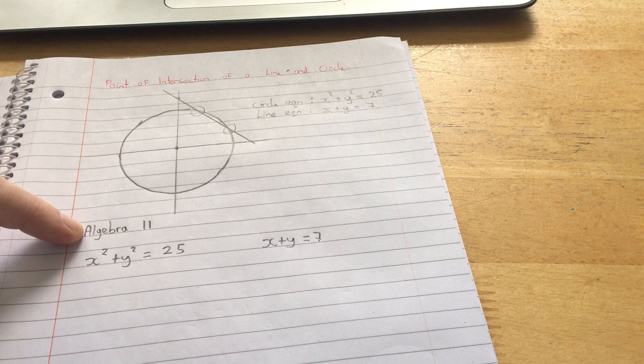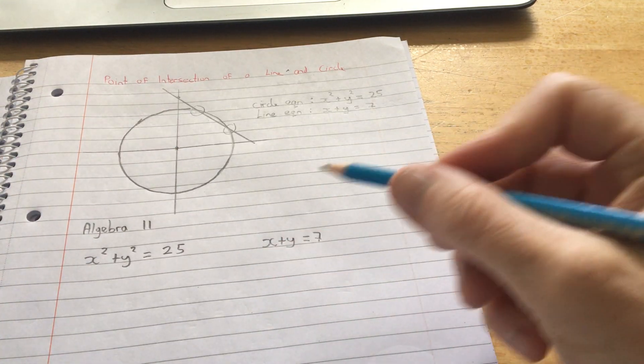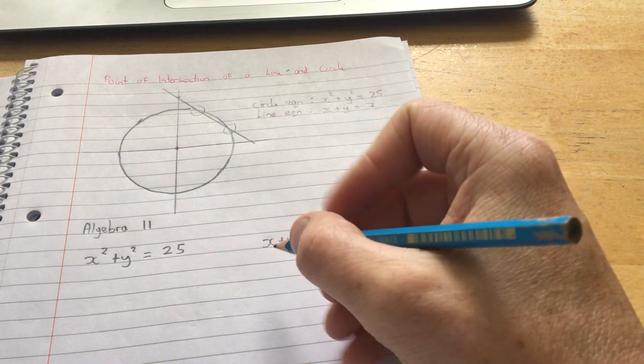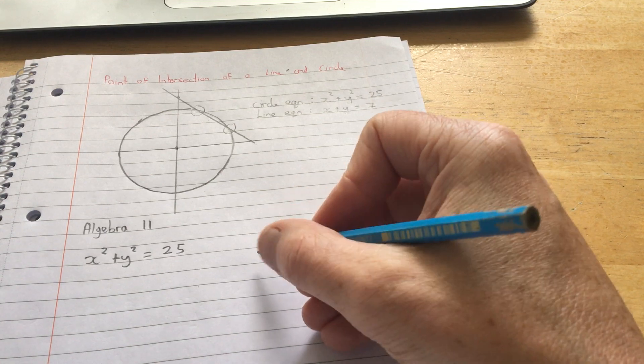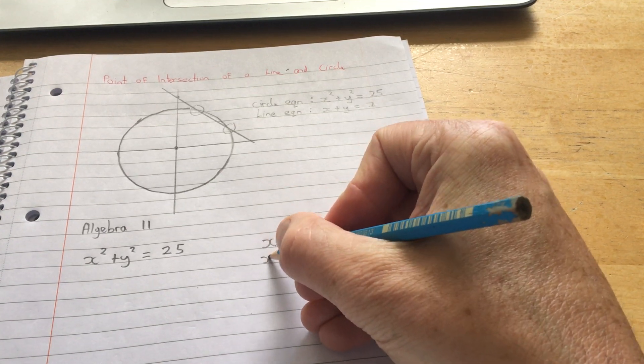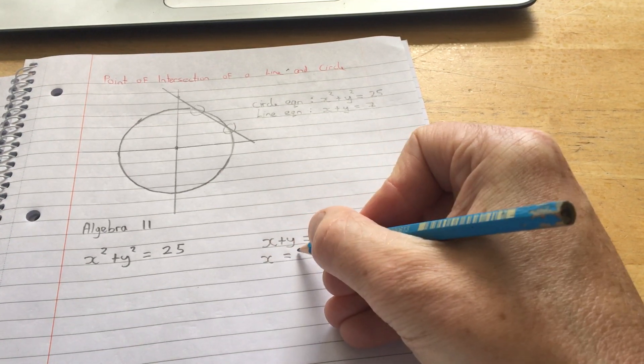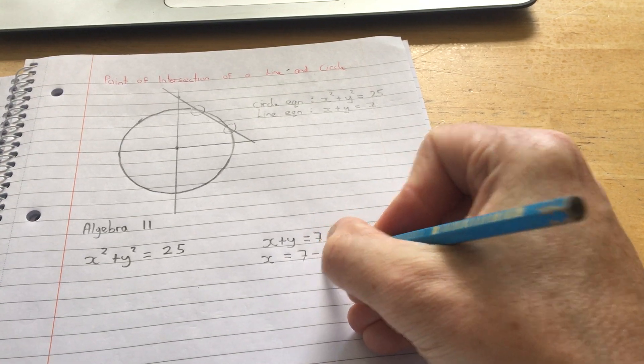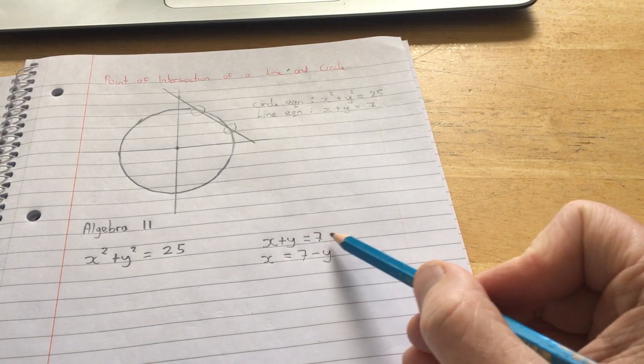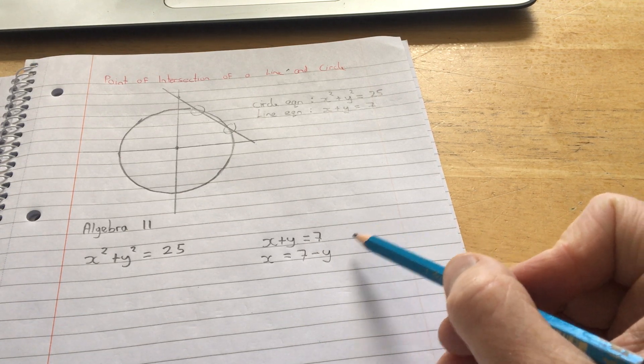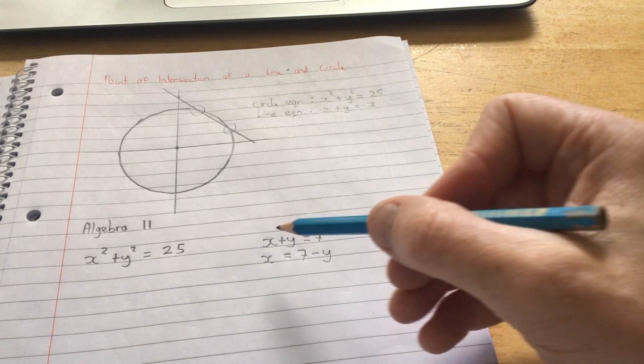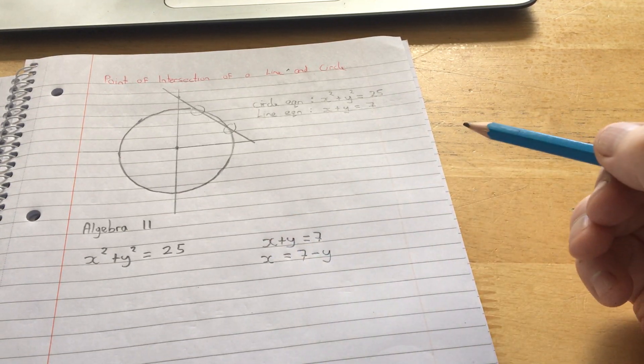I have x squared plus y squared equals 25. I can't solve that because there are two unknowns. But what I can do is take the equation of the line, and you'll always be taking the equation of the line, and rewrite it. x equals 7 minus y. I could rewrite it y equals 7 minus x as well if I wanted. It doesn't make a difference in this question because they're both 1x and 1y.